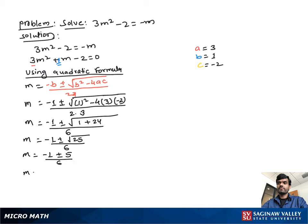Now splitting into two parts: m equal to negative 1 plus 5 over 6, or m equal to negative 1 minus 5 over 6.